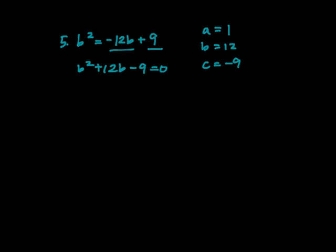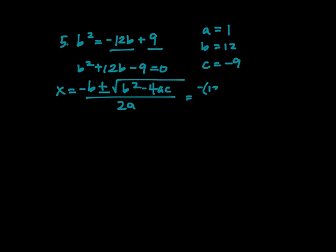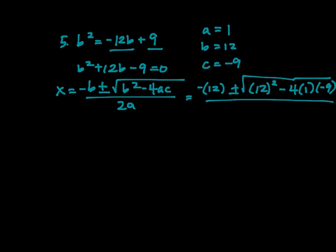So let's substitute it into our quadratic formula. So x equals negative b plus or minus square root b squared minus 4ac all over 2a. So I'm going to put a negative 12 inside my b and 12 squared minus 4 times 1 times negative 9 all over 2 times 1.